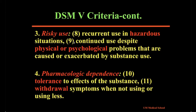The third category focuses on risky patterns of use. This includes two criteria focusing on hazardous patterns of use and use in the presence of other medical and psychological conditions that are made worse by the use. The fourth category focuses on the pharmacological attributes of addiction, with two criteria focusing on the presence of tolerance and withdrawal.